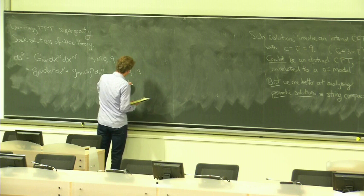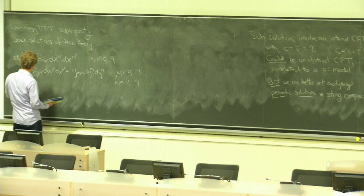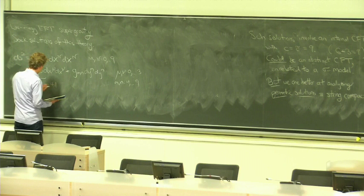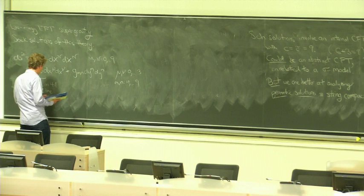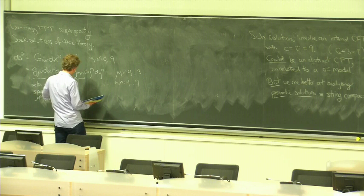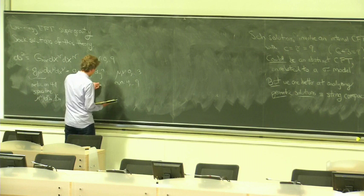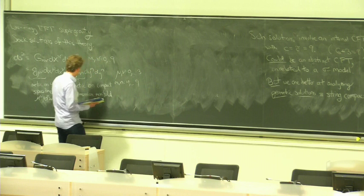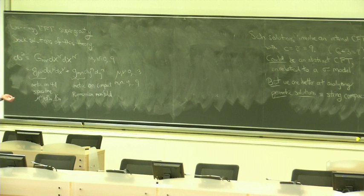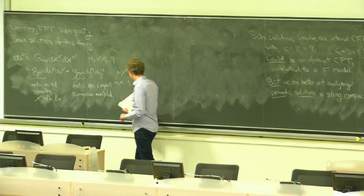And I will take a product ansatz like this: G_{mu nu} dx^mu dx^nu plus g_{mn} dy^m dy^n where mu and nu range from 0 to 3 and m and n range from 4 to 9. G_{mu nu} is the metric on some 4d spacetime which I'm going to be assuming is maximally symmetric. So, Minkowski space AdS_4 dS_4. And this metric, G_{MN}, is a metric on a compact Riemannian manifold.